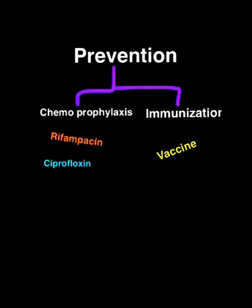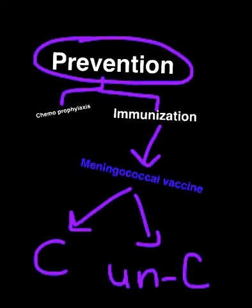For immunization, we use the meningococcal vaccine. There are two forms: conjugated and unconjugated. The conjugated forms include Menveo and Menactra, whereas the unconjugated form includes Menomune.